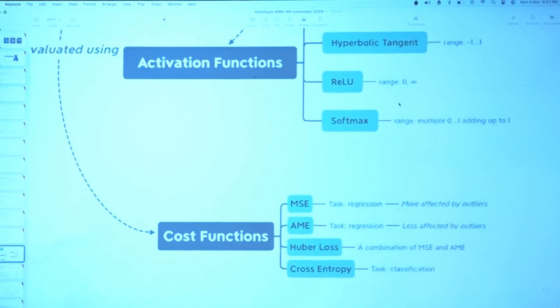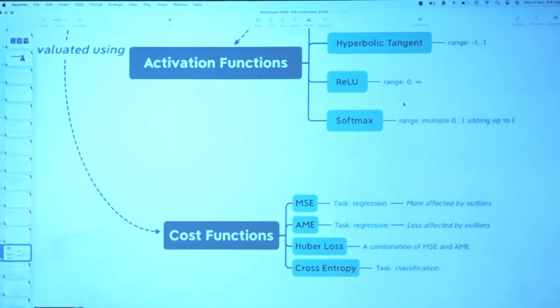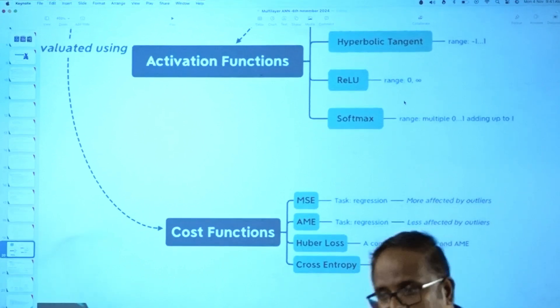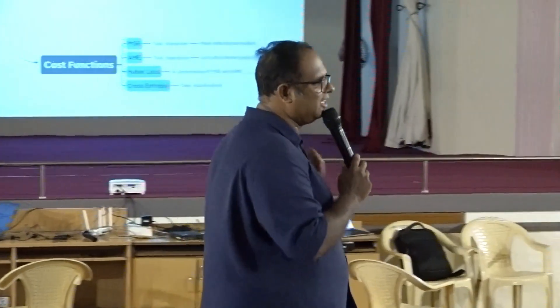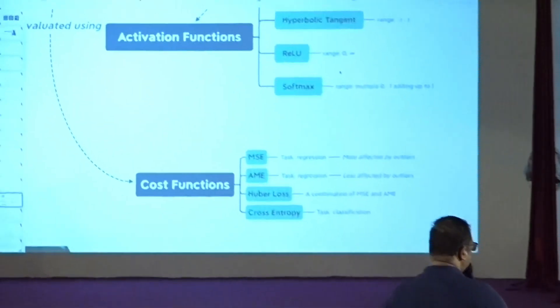One is FNC — mean square error. This is basically error calculation: MSE mean square error, then binary cross entropy.